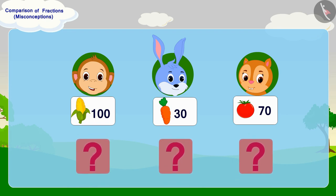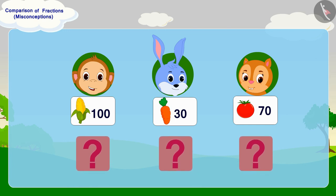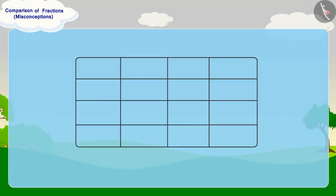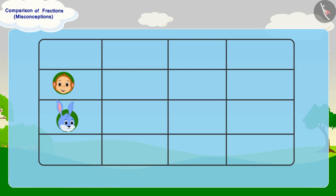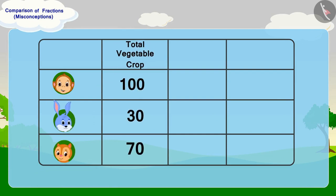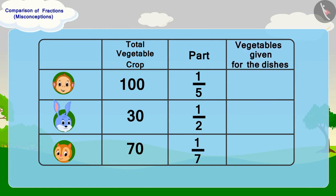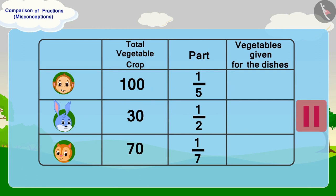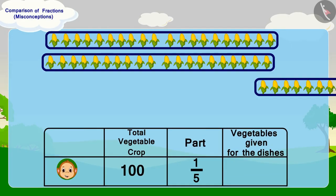So what shall we do? To solve the confusion between the three of them, we have to find out the number of vegetables given by each of them. Here the total quantity and share of vegetables grown in the crops of Babban, Bunny, and Chanda is written. Can you find the number of vegetables given by all three? If you want, you can stop the video and find the answer.